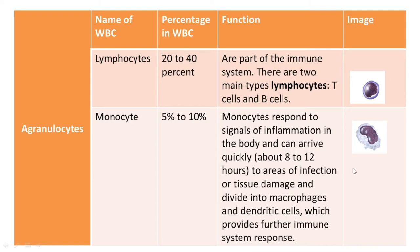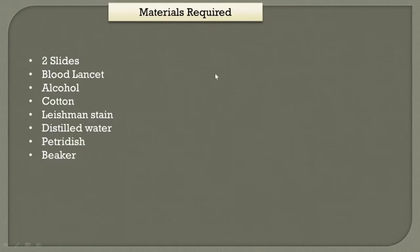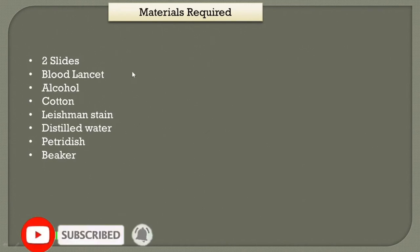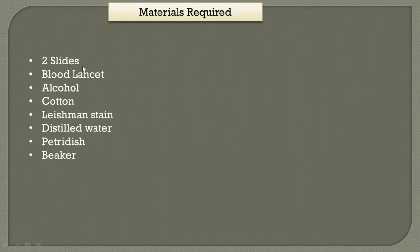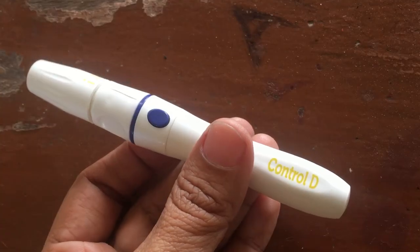Next we are going to see the materials required for doing this practical — preparing the blood smear and observing different types of WBC. We need two slides, a blood lancet, alcohol to disinfect our finger, cotton, Leishman stain (this is the stain we are using for this practical), distilled water, a petri dish, and a pipette.